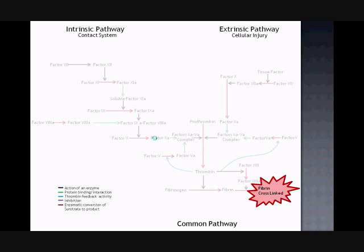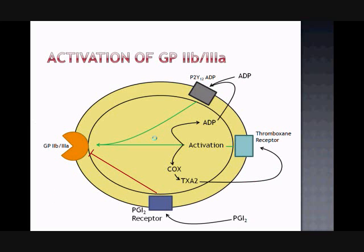Before we lead into this final clot formation, it is also important to understand the mechanism behind the formation of the initial platelet plug which takes place in the blood platelets themselves. Their aggregation is initiated by the activation of the GP2B3A protein on the surface of the platelet, which upon activation experiences a conformational change that allows it to make the necessary bonds with the other platelets in the formation of a platelet plug.